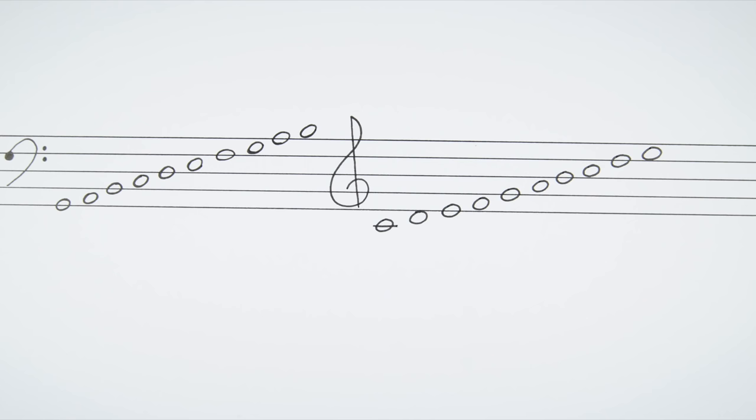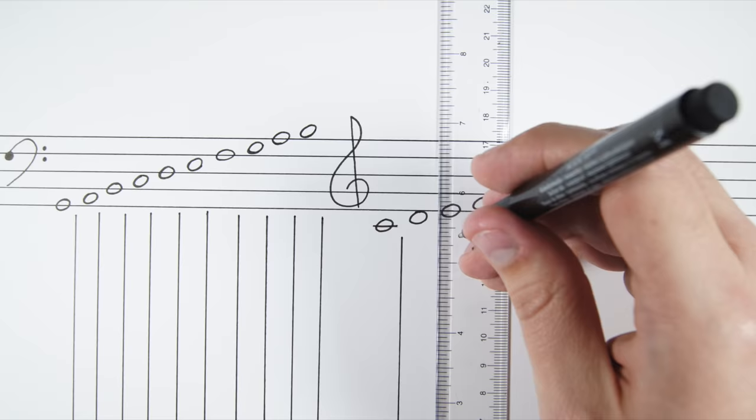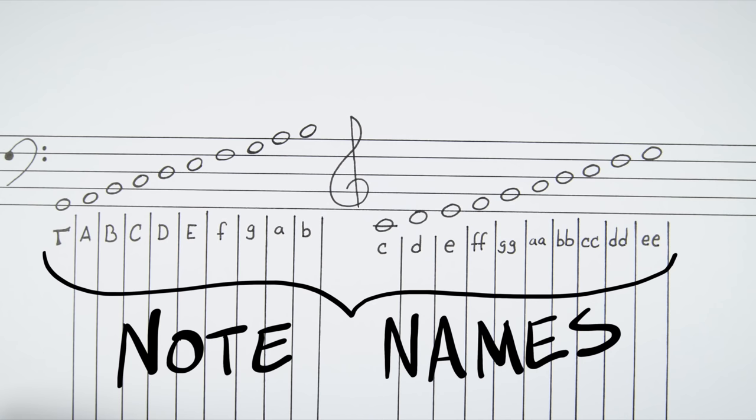I'm not talking like today's music where each note is one of the seven letters of the musical alphabet A, B, C, D, E, F, or G. No, each one of these notes had a particular name which included the note name but also its position in the hexachord system.